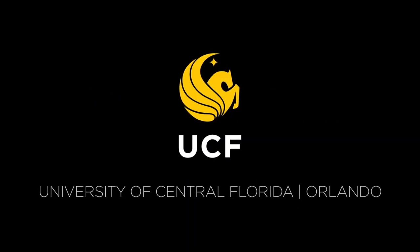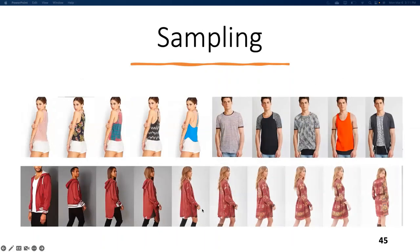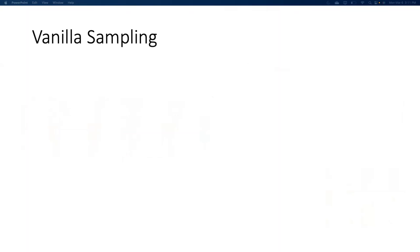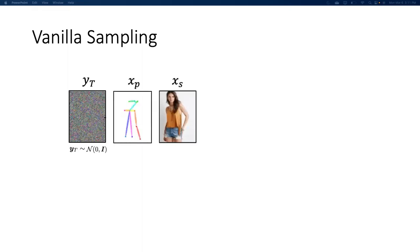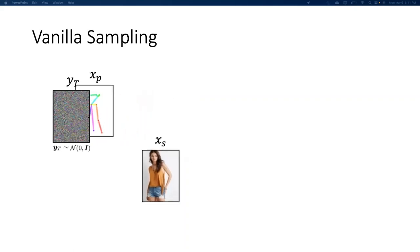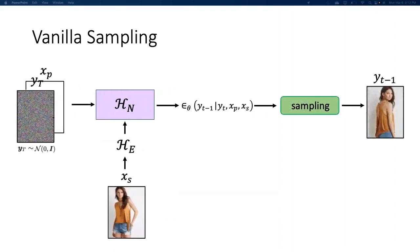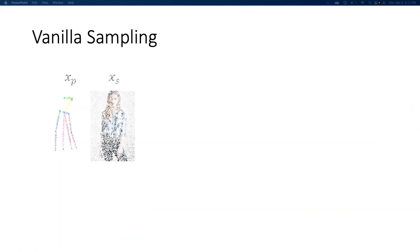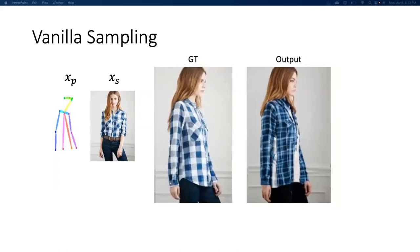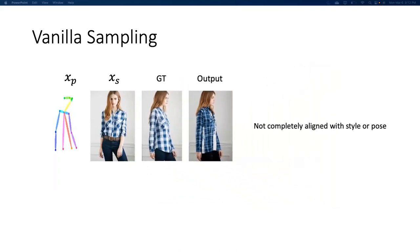Let's look at how sampling works in such a diffusion model. Prudhvi will cover this. For vanilla sampling, given YT sampled from a Gaussian distribution along with target pose and target style as inputs, the model generates a conditioned noise, which is then used to sample YT-1. However, comparing with the ground truth, the output is not completely aligned with both style and pose. So to tackle this, the authors explored classifier-free guidance.